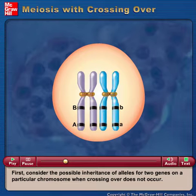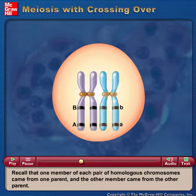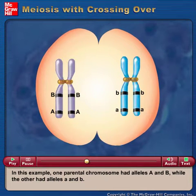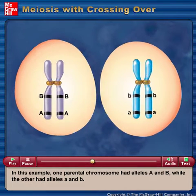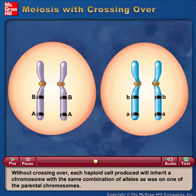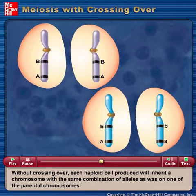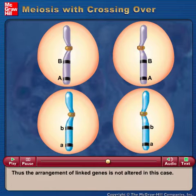First, consider the possible inheritance of alleles for two genes on a particular chromosome when crossing over does not occur. One member of each pair of homologous chromosomes came from one parent, and the other member came from the other parent. In this example, one parental chromosome had alleles A and B, while the other had alleles a and b. Without crossing over, each haploid cell produced will inherit a chromosome with the same combination of alleles as one of the parental chromosomes. Thus, the arrangement of linked genes is not altered in this case.